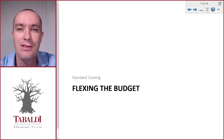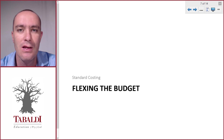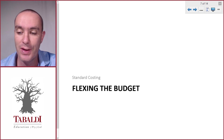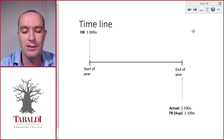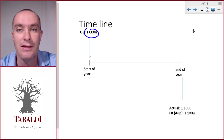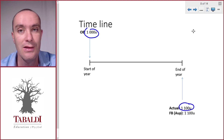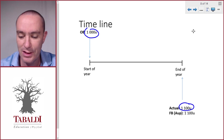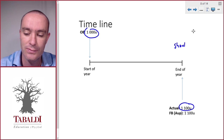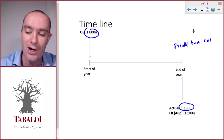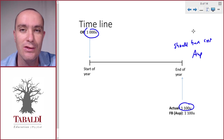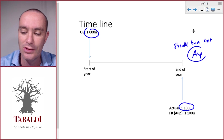Let's take a look at how to flex the original budget to make it more comparable with the actual numbers. If the original budget prepared at the start of the year is for a different amount of units than were actually produced during that year, we have to flex that original budget. We basically ask ourselves: how much should it have cost us if we had known what the actual units produced would have been? So we just restate the original budget for the actual units produced.